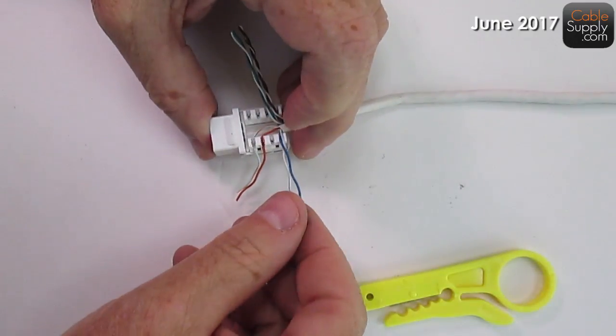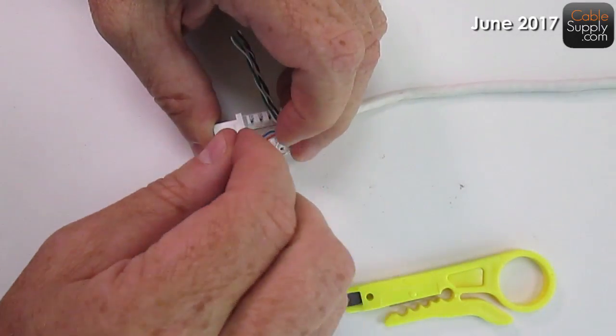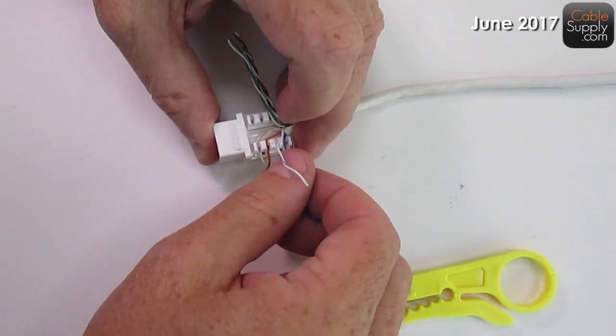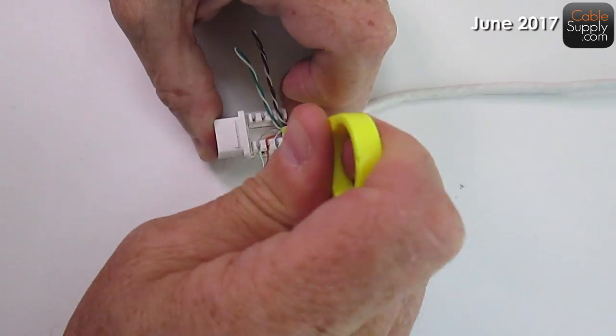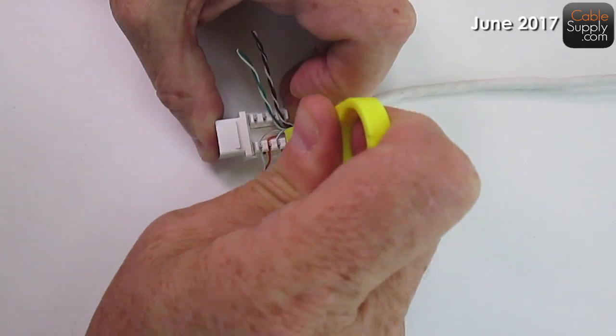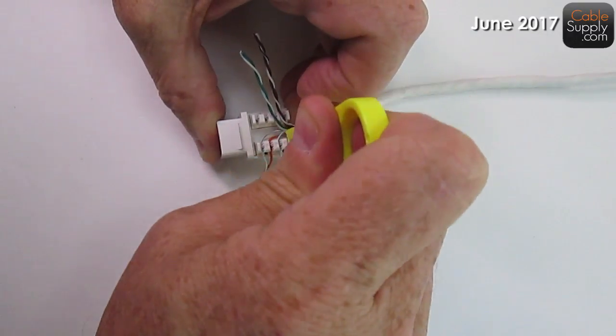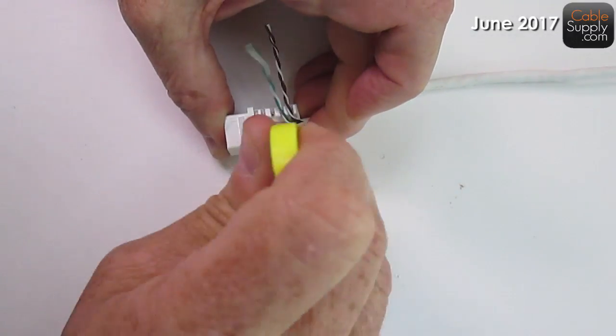The next one is going to be blue white. Again, it's going to be with the blue and it has white in it. So I'm going to push that. I'm going to punch that down. If I can get it to go down. Maybe it's just already down.